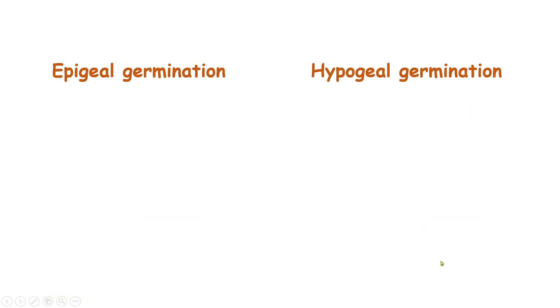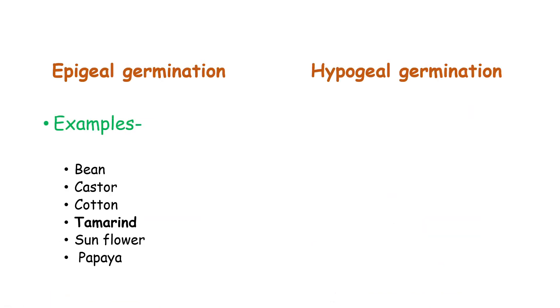Examples of epigeal germination include bean, castor, cotton, tamarind, sunflower, and papaya.